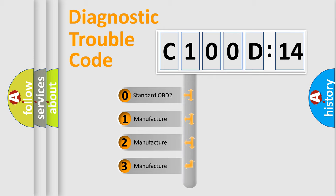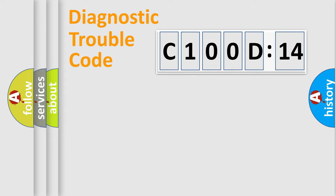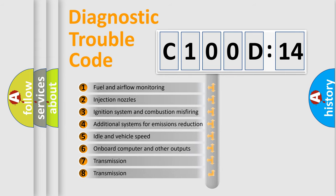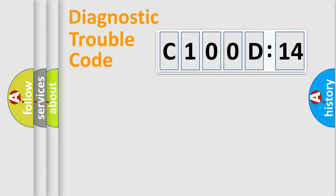If the second character is expressed as zero, it is a standardized error. In the case of numbers 1, 2, 3, it is a manufacturer-specific expression of the car-specific error. The third character specifies a subset of errors. The distribution shown is valid only for the standardized DTC code. Only the last two characters define the specific fault of the group.